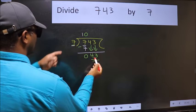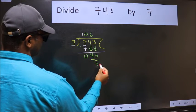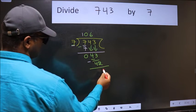A number close to 43 in the 7 table is 7 times 6, 42. Now we should subtract. We get 1.